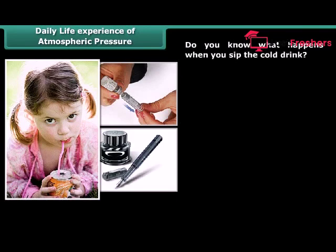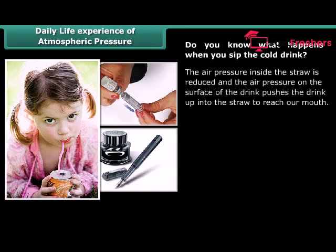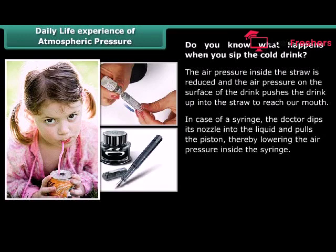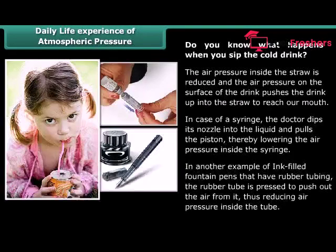When you sip a cold drink through a straw, the air pressure inside the straw is reduced and the air pressure on the surface of the drink pushes the drink up into the straw to reach your mouth. In case of a syringe, the doctor dips its nozzle into the liquid and pulls the piston, thereby lowering the air pressure inside the syringe. Another example is ink-filled fountain pens with rubber tubing — the rubber tube is pressed to push out the air, thus reducing air pressure inside the tube.